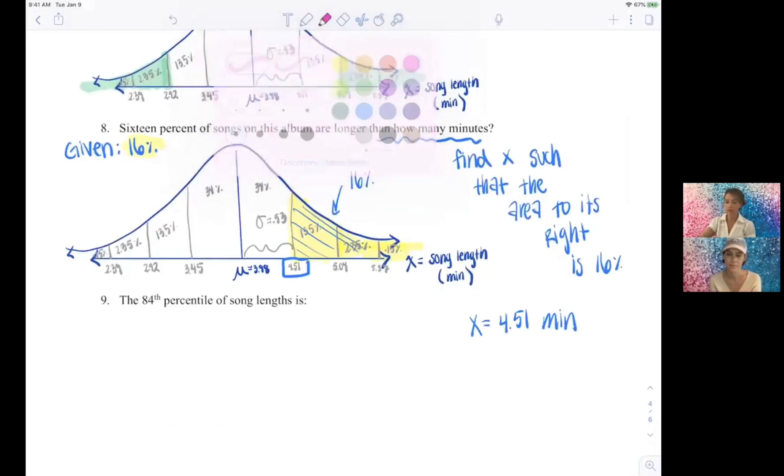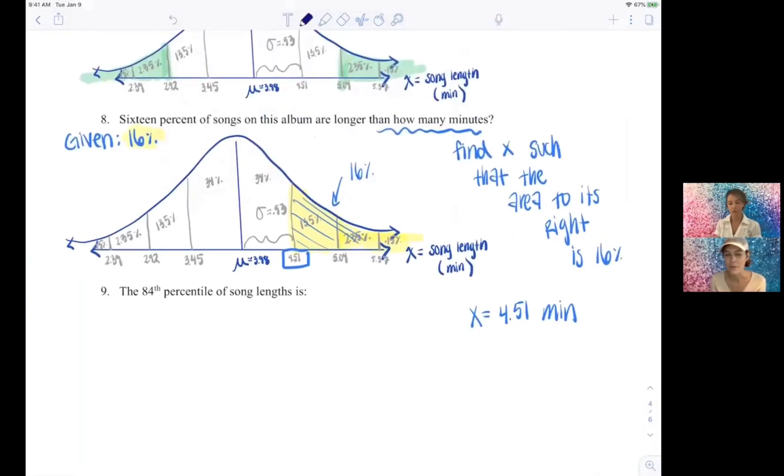Yeah, so if we have 16 on the right in number eight, that means to the left of it, that's actually 84, isn't it? Right, so we kind of don't need a new graph because we can notice if we have 16 to our right.